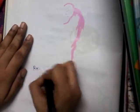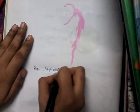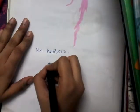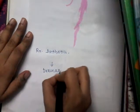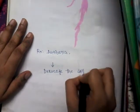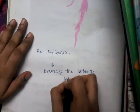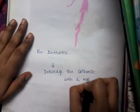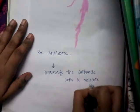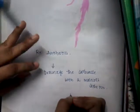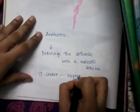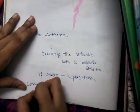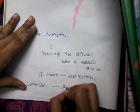For treatment, first you give antibiotics, and after that you will have to drain the carbuncle with a Malecot catheter. If the condition is very severe, you perform nephrectomy, but normally that is not required. The most common complication of renal carbuncle is severe septicemia.